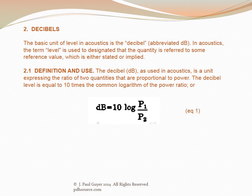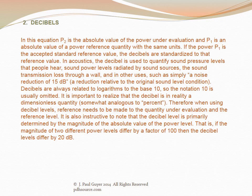The basic unit of level in acoustics is the decibel, abbreviated dB. In acoustics, the term level designates that the quantity is referred to some reference value, either stated or implied. The decibel is used as a unit expressing the ratio of two quantities proportional to power. The decibel level equals 10 times the common logarithm of the power ratio: dB = 10 × log(P1/P2), where P1 is the power being perceived and P2 is a reference power level.